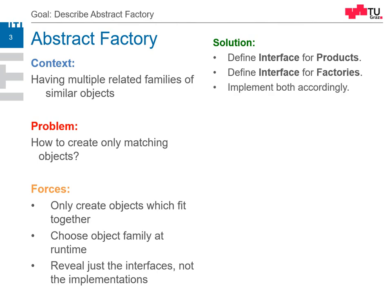Afterwards we have to implement both the products and the factories accordingly. Think of an application which uses different user interfaces — for example, one is a classical Windows Forms interface, the second one is a Windows Presentation Foundation (WPF) interface. WPF uses completely different types of buttons, text boxes, and window elements than Windows Forms, and they are not compatible to each other. We need to select the needed factory at runtime, deciding which actual framework we're going to use.